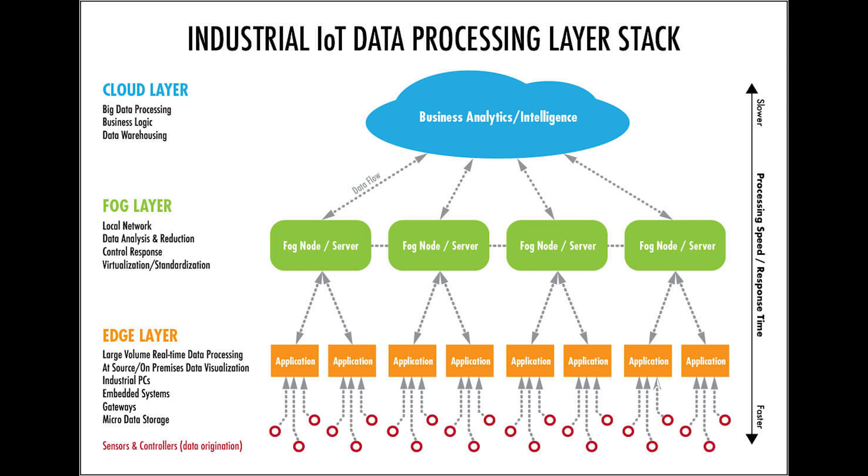Just like fog computing, edge computing is defined as the computational processing of sensor data away from centralized nodes and close to the network's logical edge toward individual data sources, basically bringing computational processing closer to whatever is catching the data.